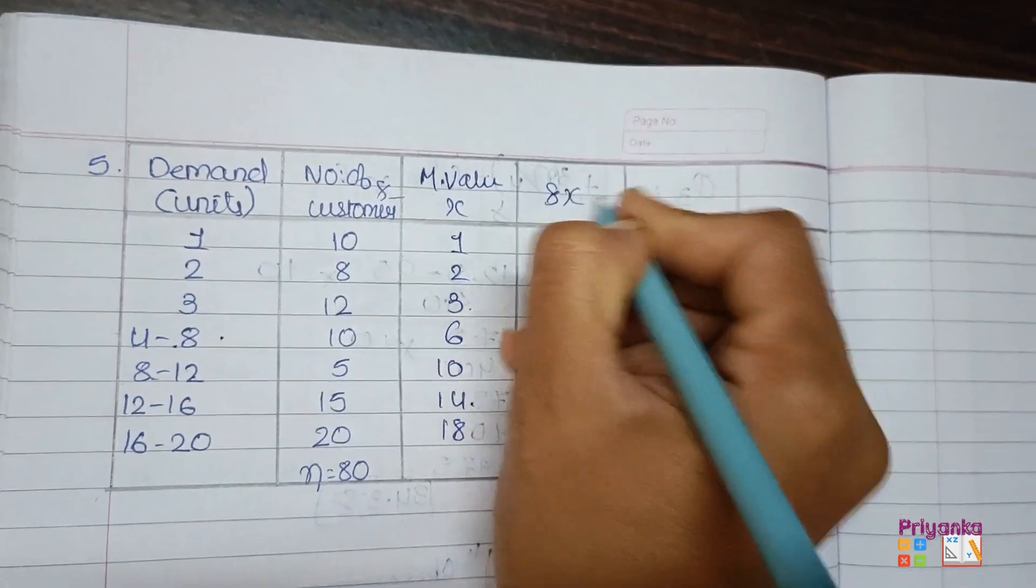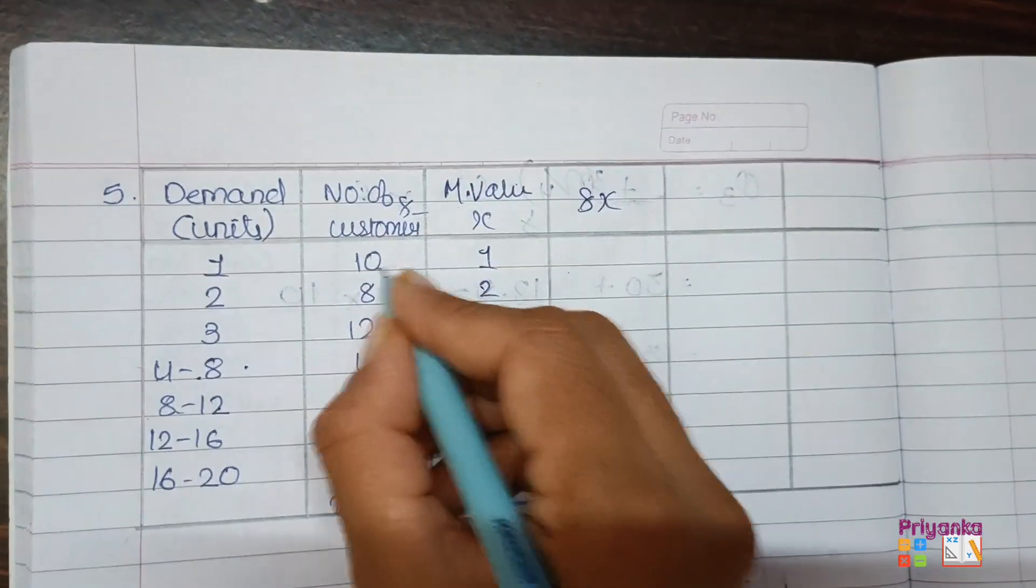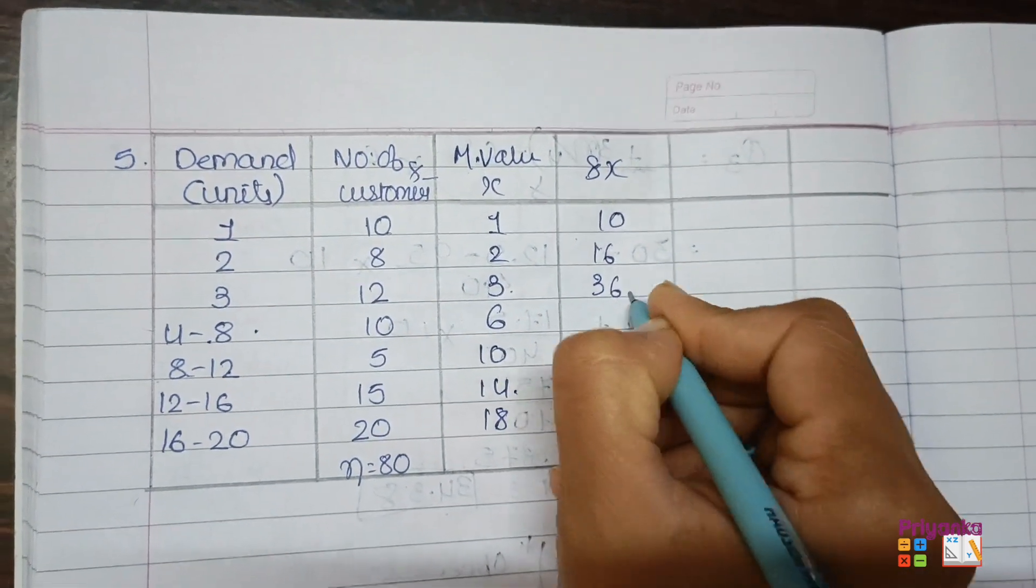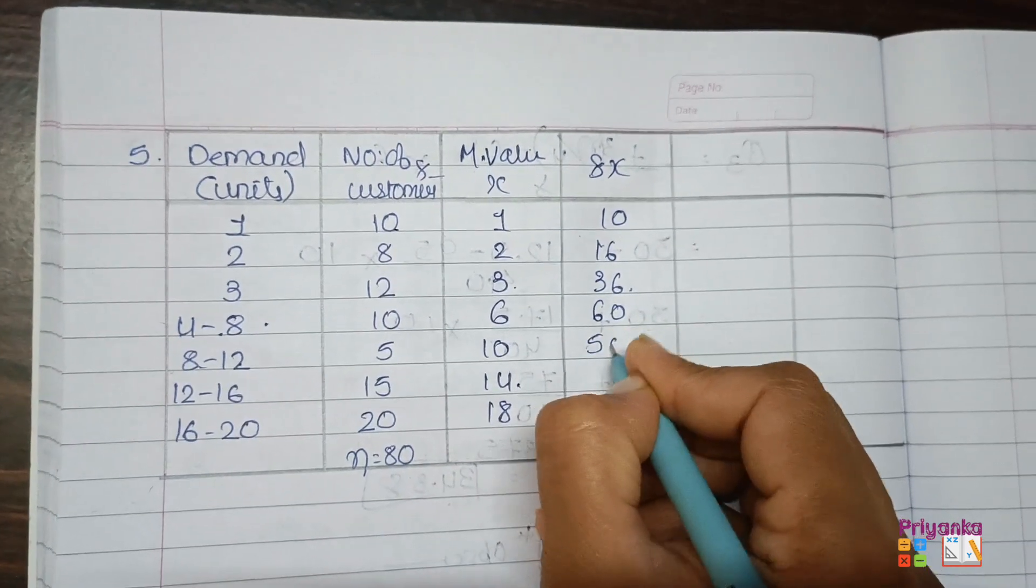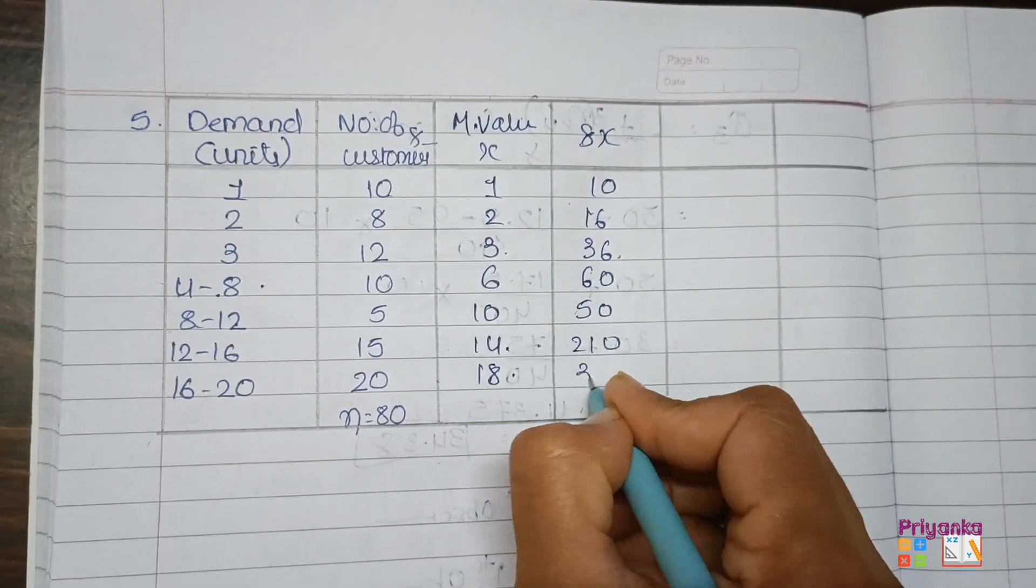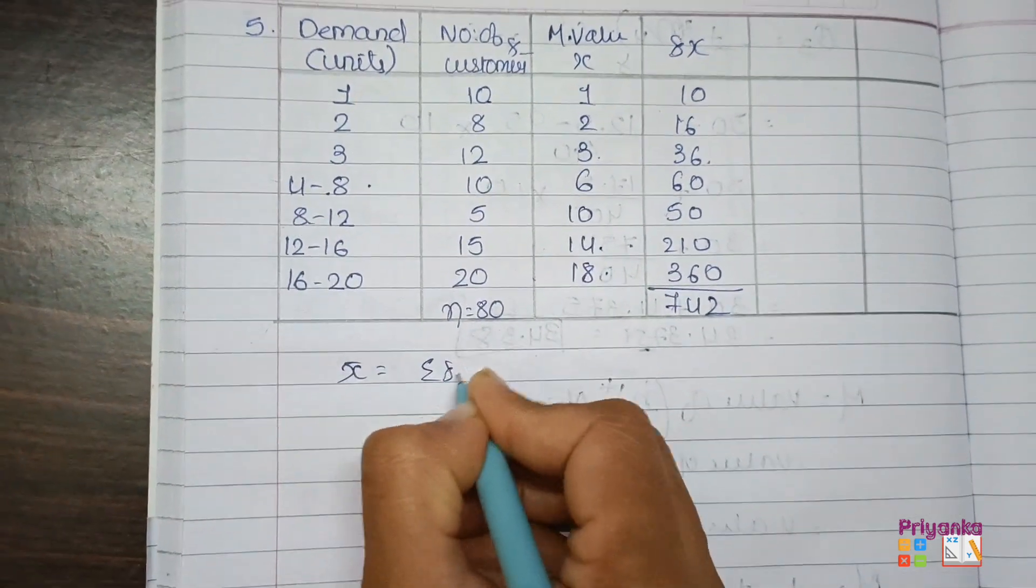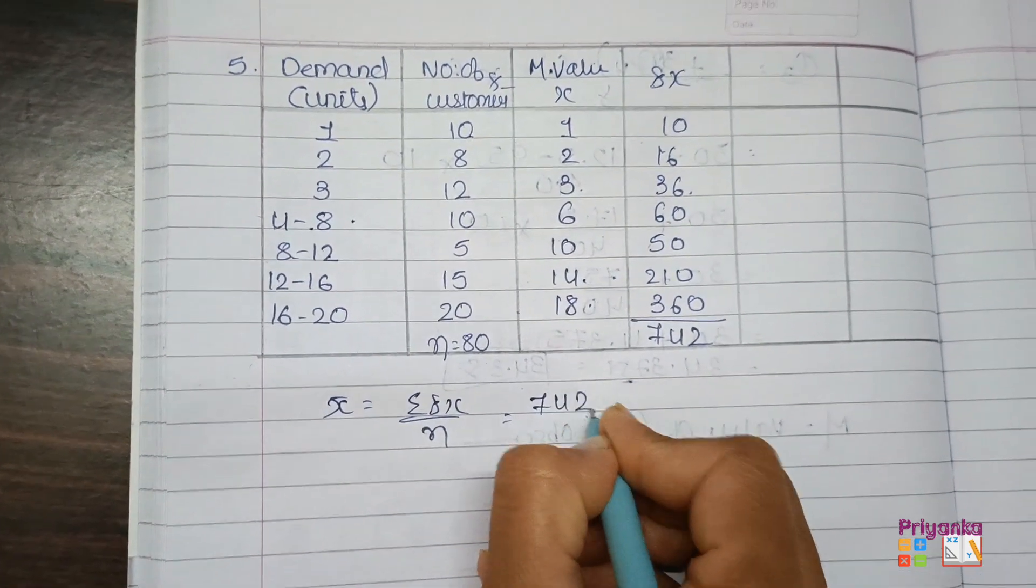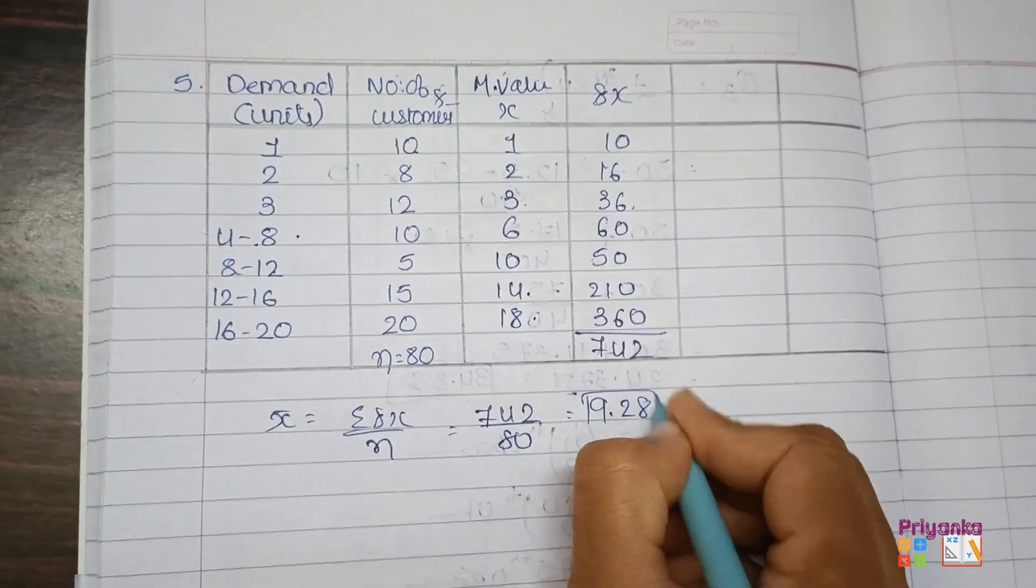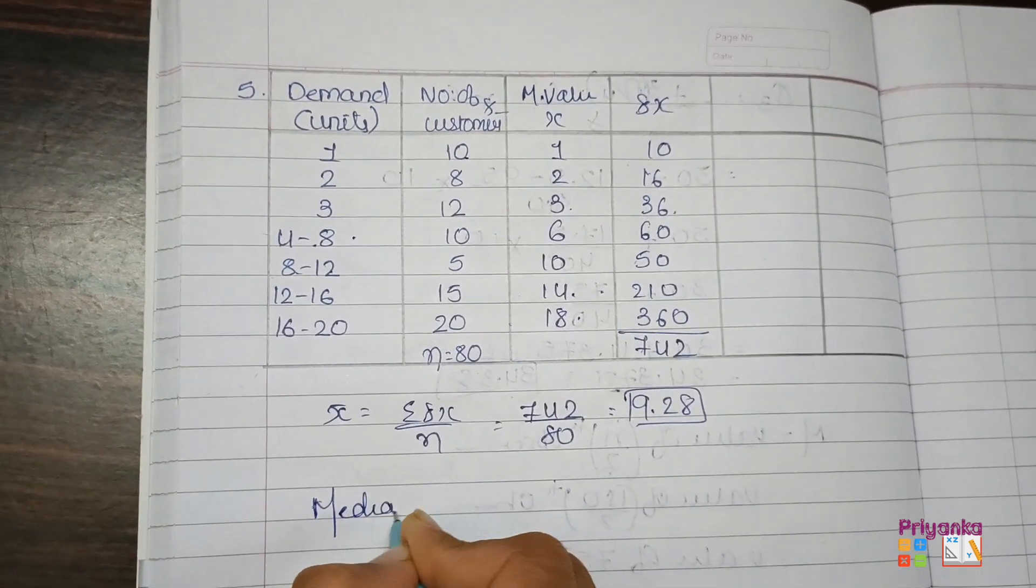After finding mid value, that would be your X and here is the frequency. Get them multiplied to find out FX. 10 ones are 10, 8 twos are 16, 12 threes are 36, 10 sixes are 60, 5 tens are 50, 15 into 14 is 210, 20 into 18 is 360. The total is 742. First we'll find out the mean sigma FX upon n, 742 divided by 80, and here we get the answer in decimal, 9.28.